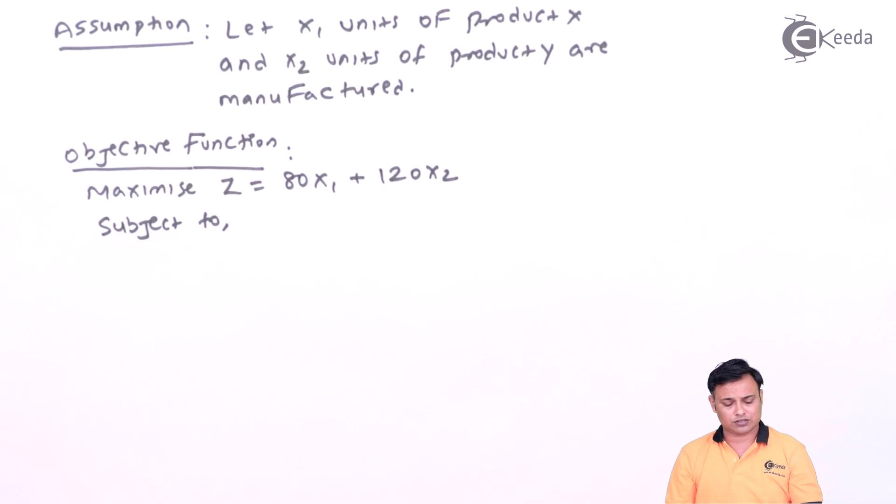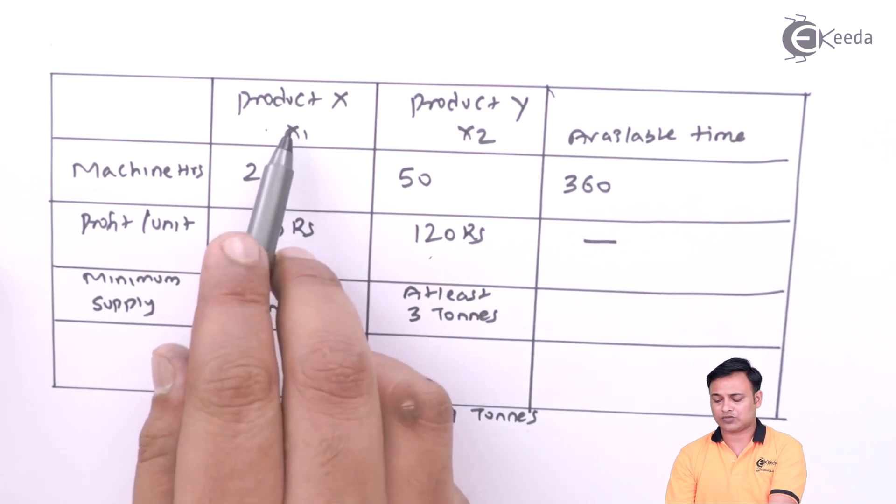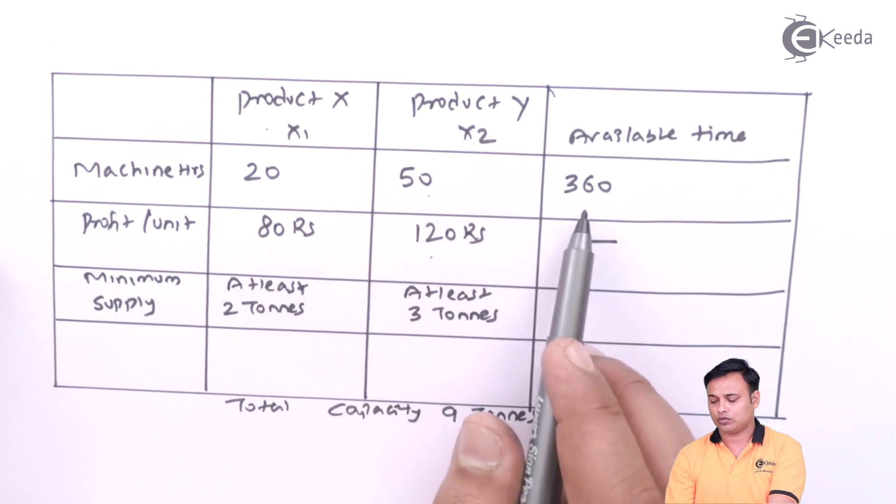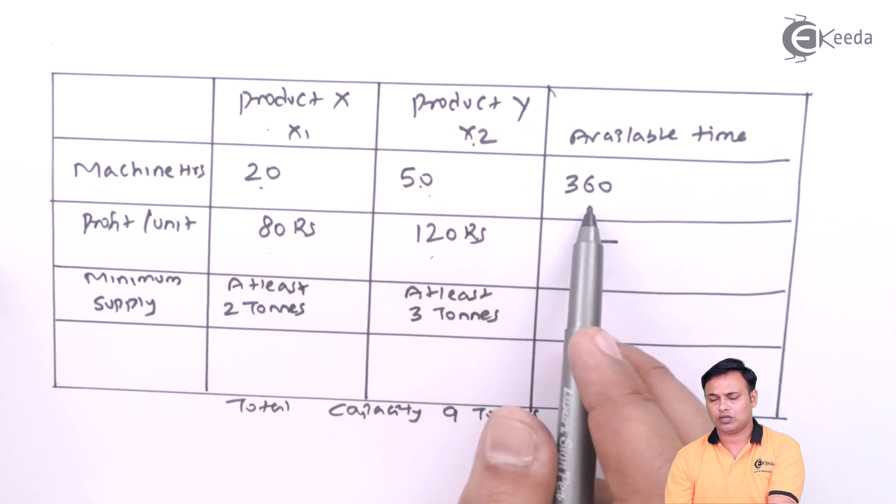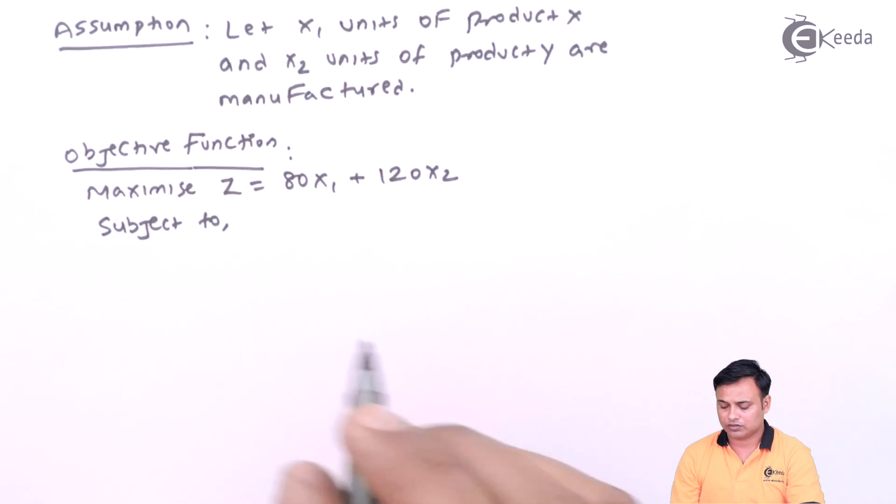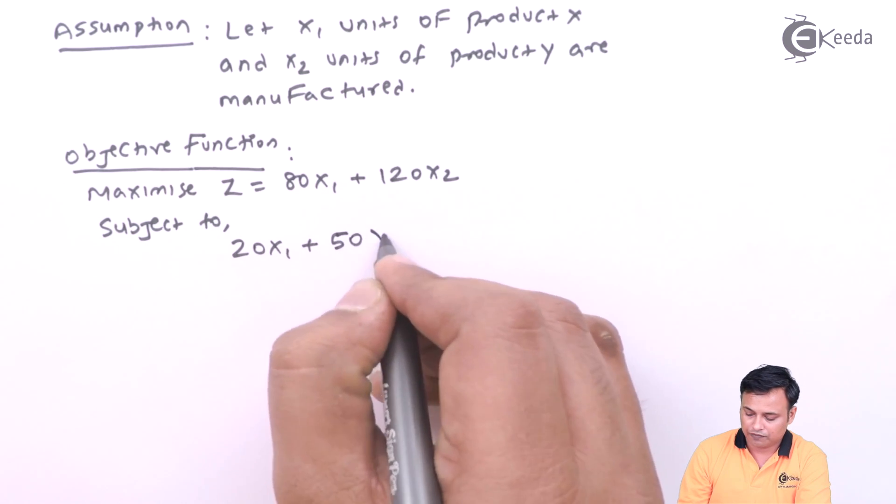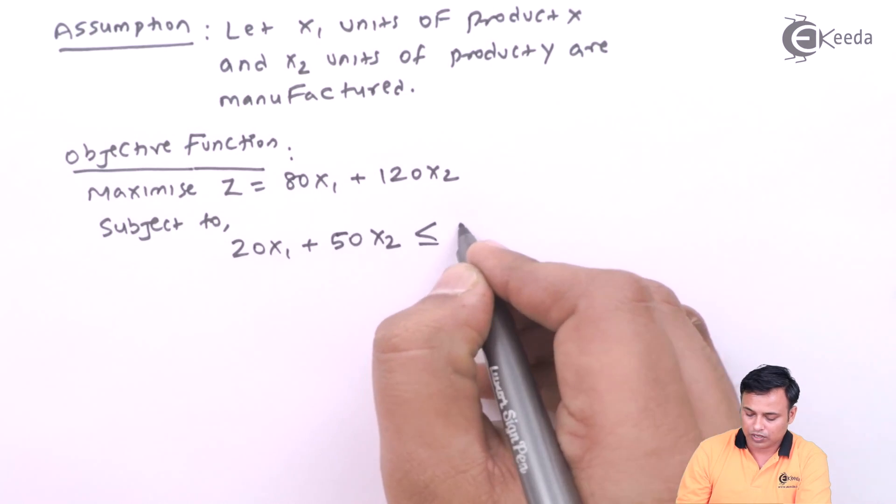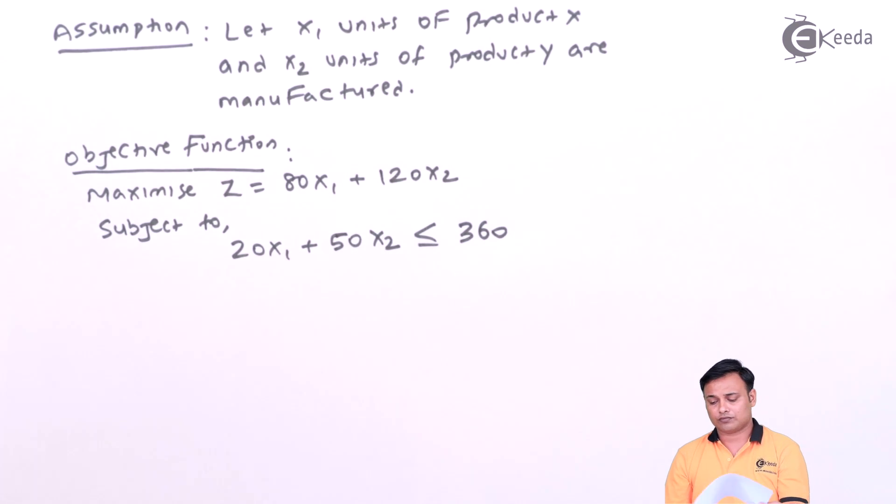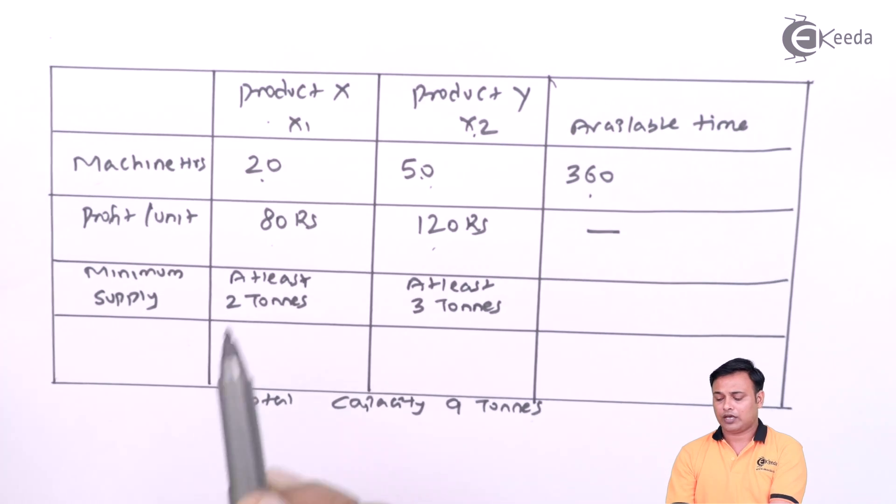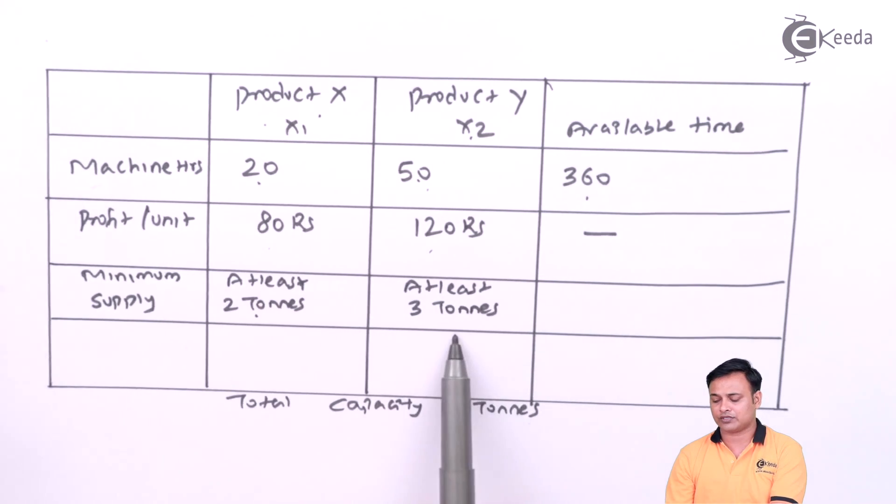Subject to I got some constraints. First machine hour constraint: 20x1 plus 50x2 should not be more than 360. So 20x1 plus 50x2 less than equal to 360.